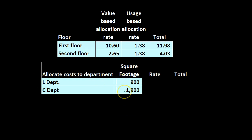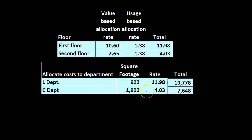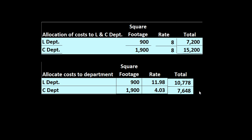We now apply these floor-specific rates to departments L and C. Department L (first floor, 900 sq ft): 900 × $11.98. Department C (second floor, 1,900 sq ft): 1,900 × $4.03. These are the new allocated costs. Comparing to the simple method — the easy $8/sq ft flat rate — we get very different numbers. There's no single correct method; management decided this weighted approach is more fair.